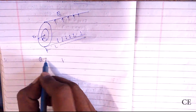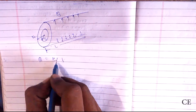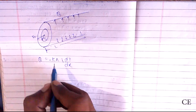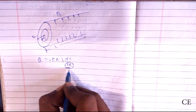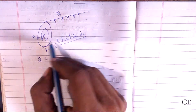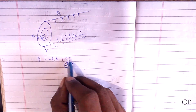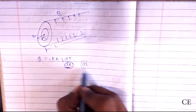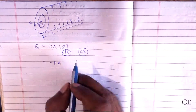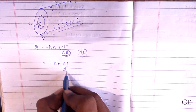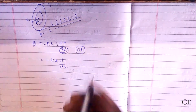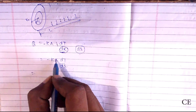First, write down Fourier's law: Q equals negative K times A times dT/dx. Here the radius is varying, so the differential is with respect to R, giving us Q equals negative K times A times dT/dR.